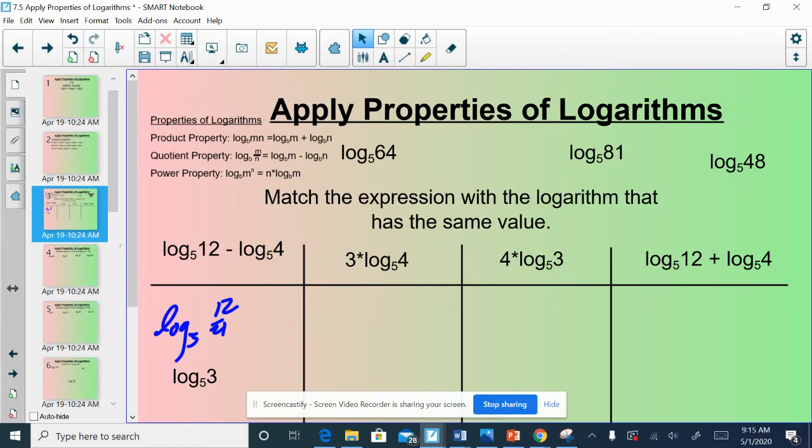We could do the same thing with this one. I hope you guys remember the power property says that if you have a number out front, that number could be written as the exponent on 4. So, it would be 4 to the third power. We know 4 to the third power is 64. 4 times 4 is 16, times 4 is 64.